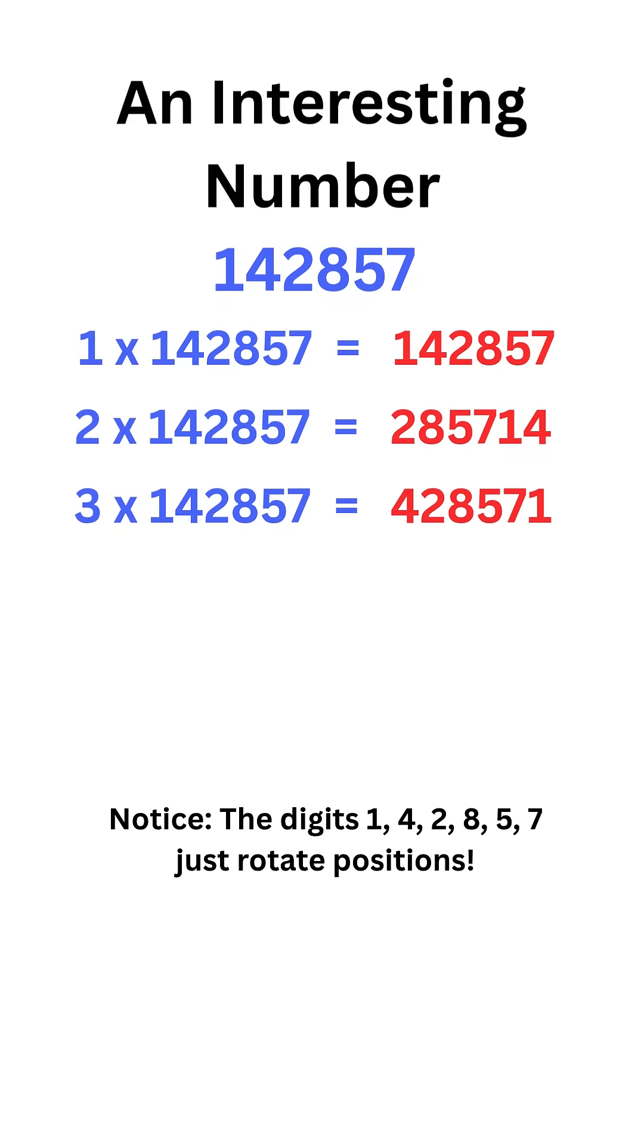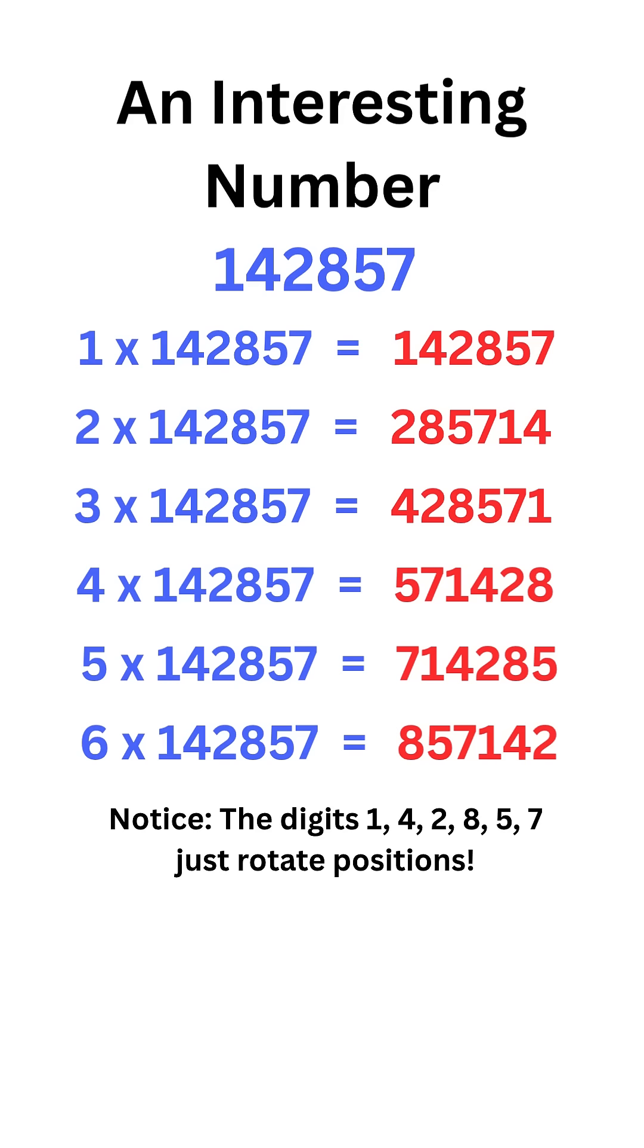How about multiplying 142,857 with 4, 5, 6? Whoa. The digits 1, 4, 2, 8, 5, 7 just rotate positions again in every multiplication. That's interesting.